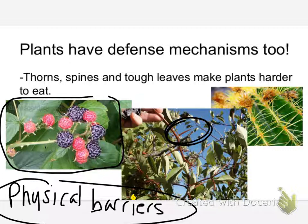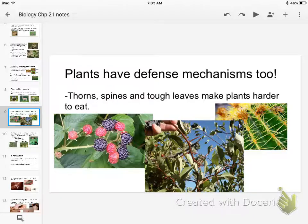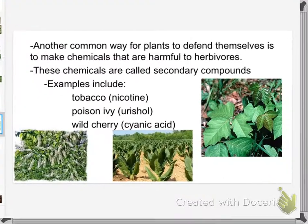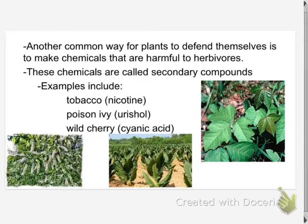Now, the other kind of defense mechanism a plant could have — it can't run away. Poisons! Could a plant be poisonous? Of course it could — lots of them. We have chemicals. This is another way plants defend themselves. Another common way for plants to defend themselves is to make chemicals that are harmful to herbivores. We call these secondary compounds.